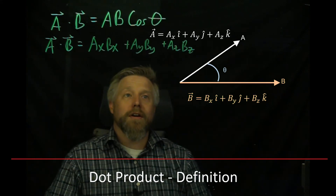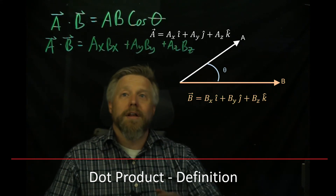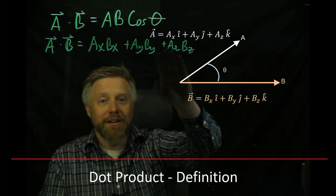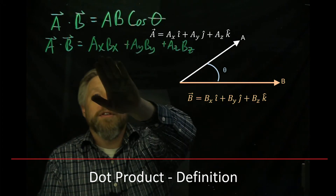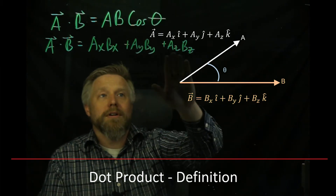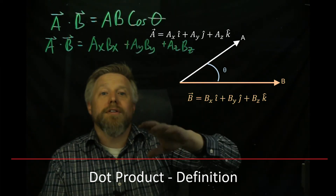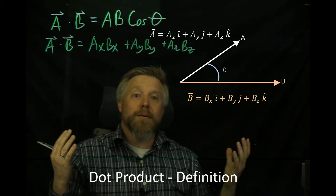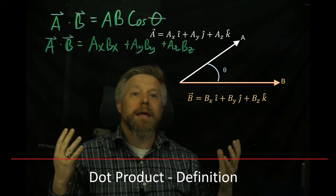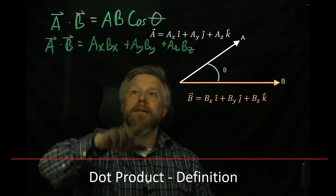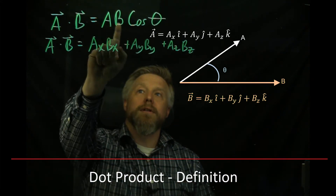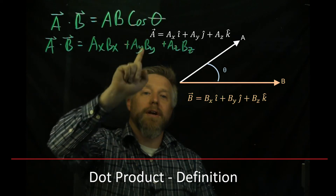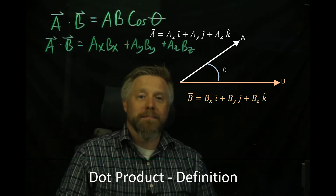I want to be very clear — there is no i, j, or k on this side. These are scalars, just numbers that add together, and you end up with a single number in the end. And what does that number mean? It means the magnitude of one vector times the magnitude of another times the cosine of the angle in between them.